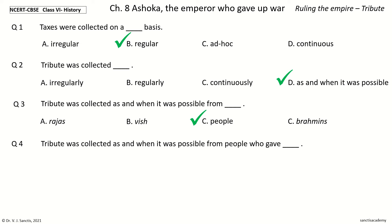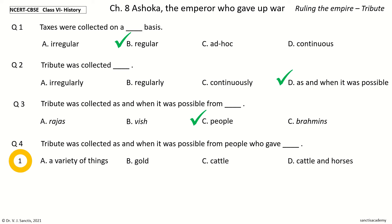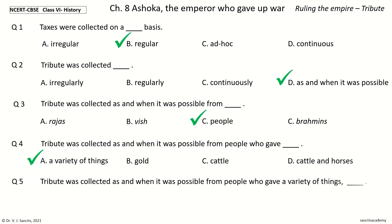Question four: people who gave blank. The options are a variety of things, gold, cattle, or cattle and horses. Your time to choose. The answer is a variety of things. So tribute was collected as and when it was possible from people who gave a variety of things.